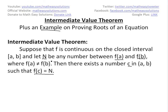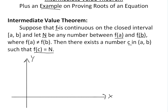I'll just show this graphically to illustrate it better. If we draw the x and y axes, and f is continuous, we draw a curve over some interval. This is at b, and this is at a — these are the closed endpoints, filled-in circles, meaning they're defined there. That's what the closed interval means.